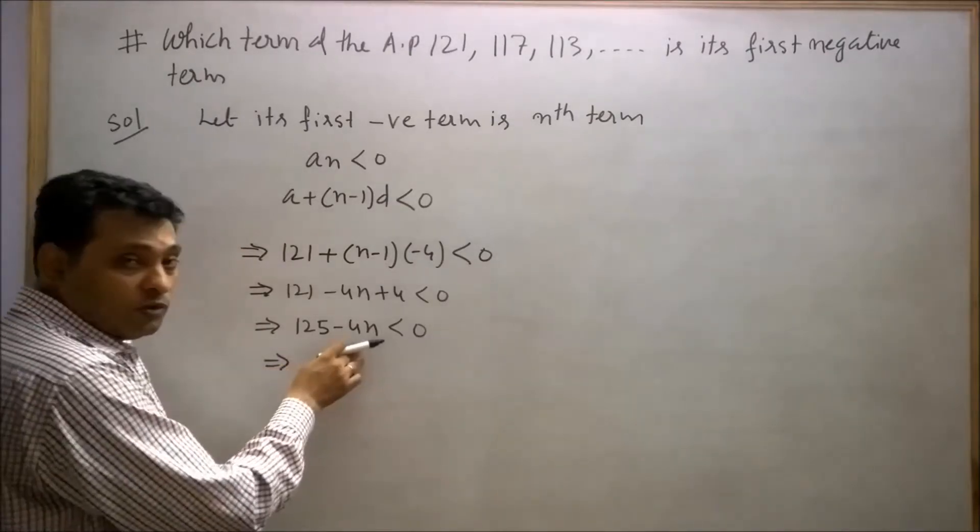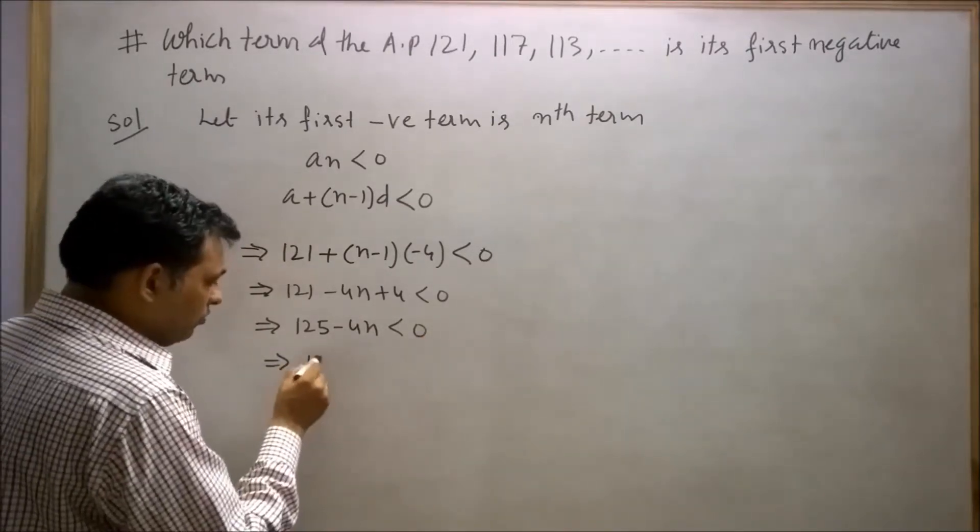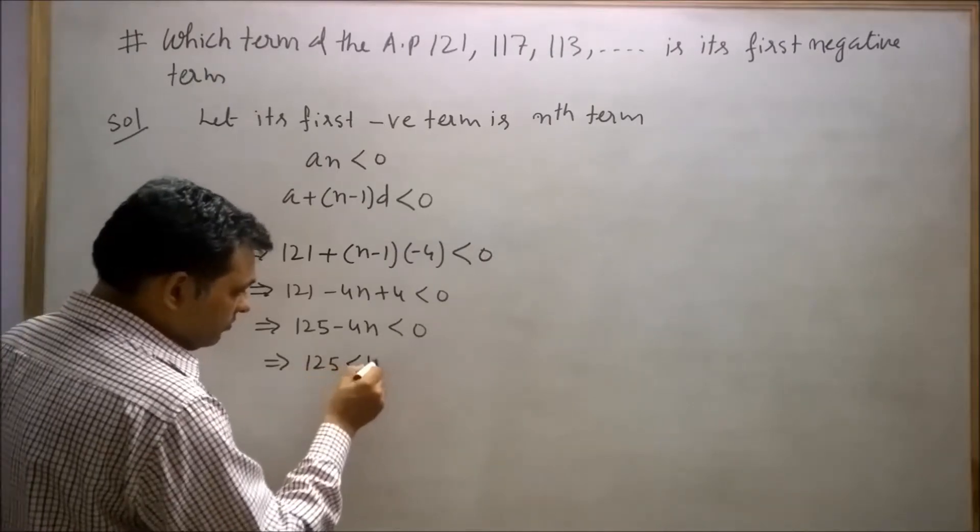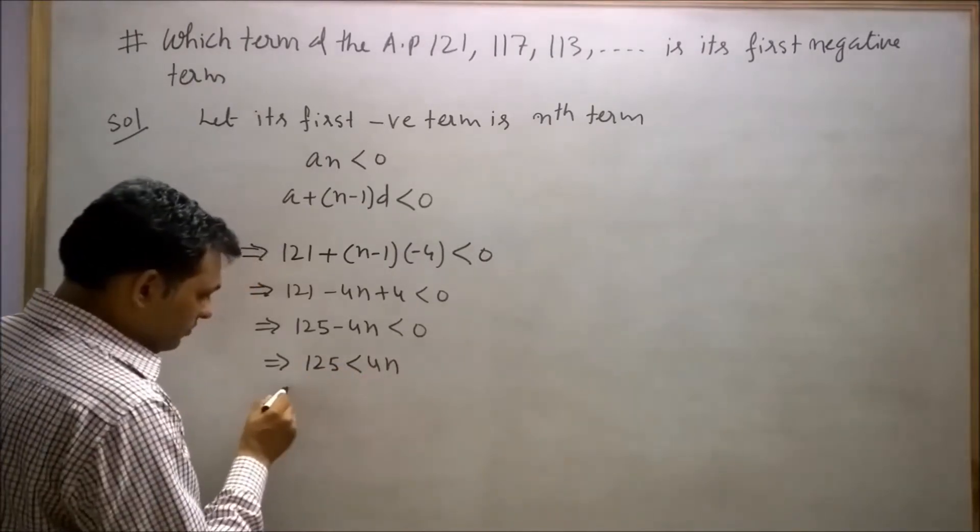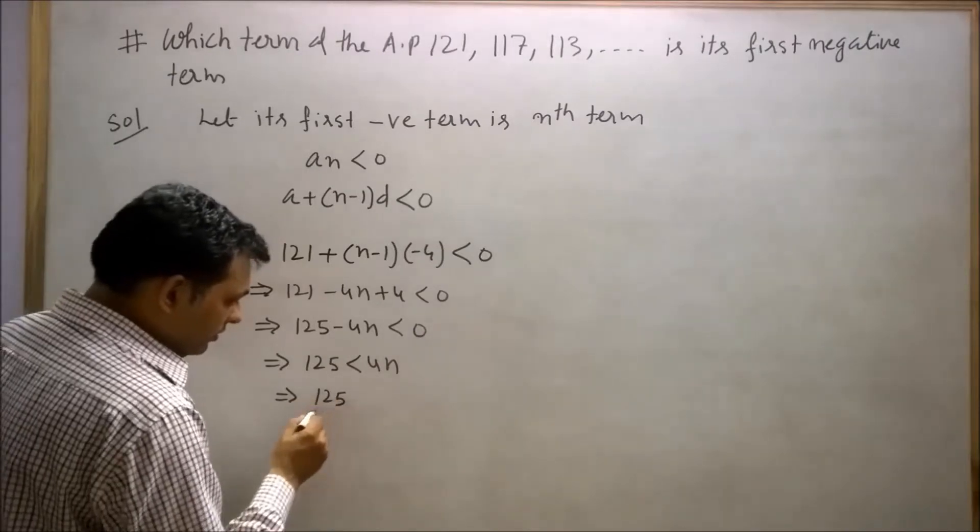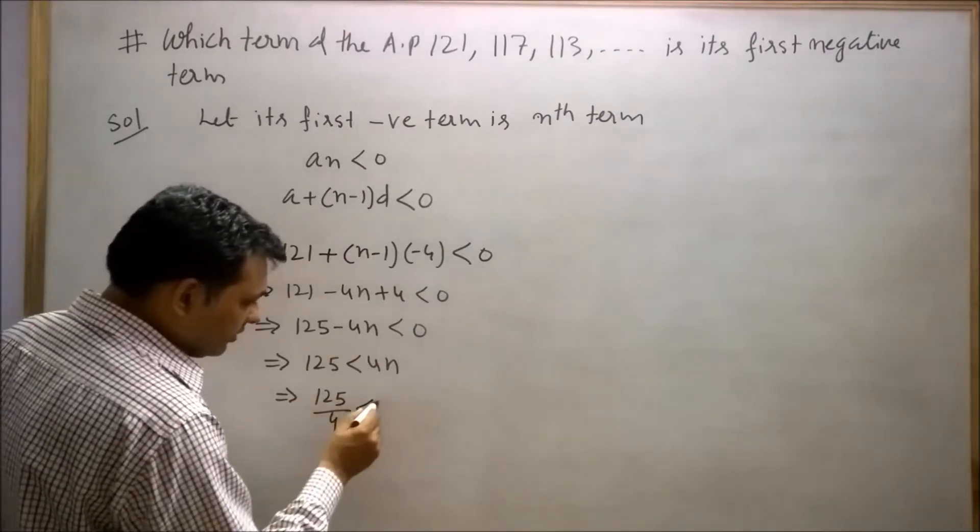Now transpose 4N to the right side, so 125 < 4N. Or we can say 125/4 < N.